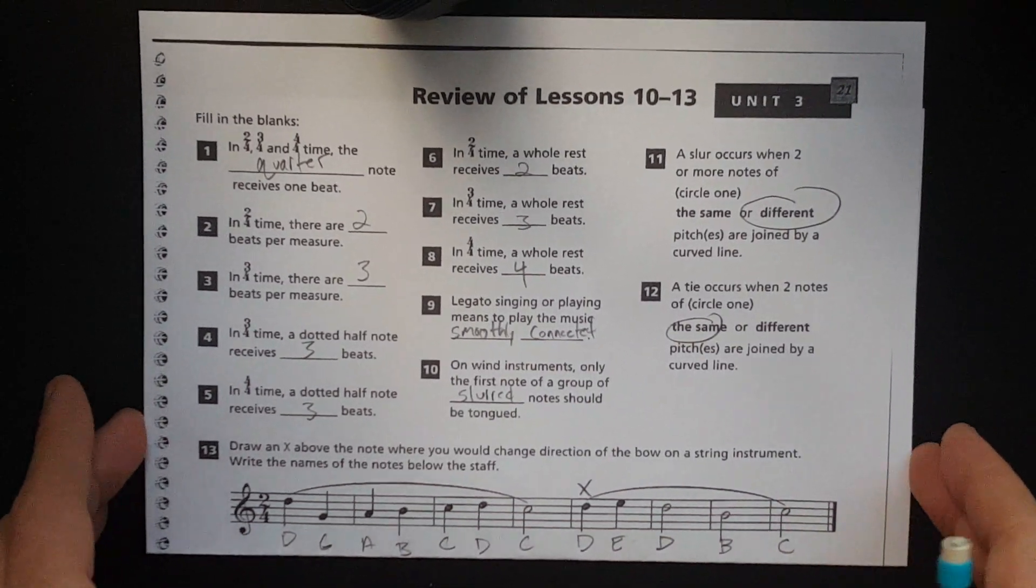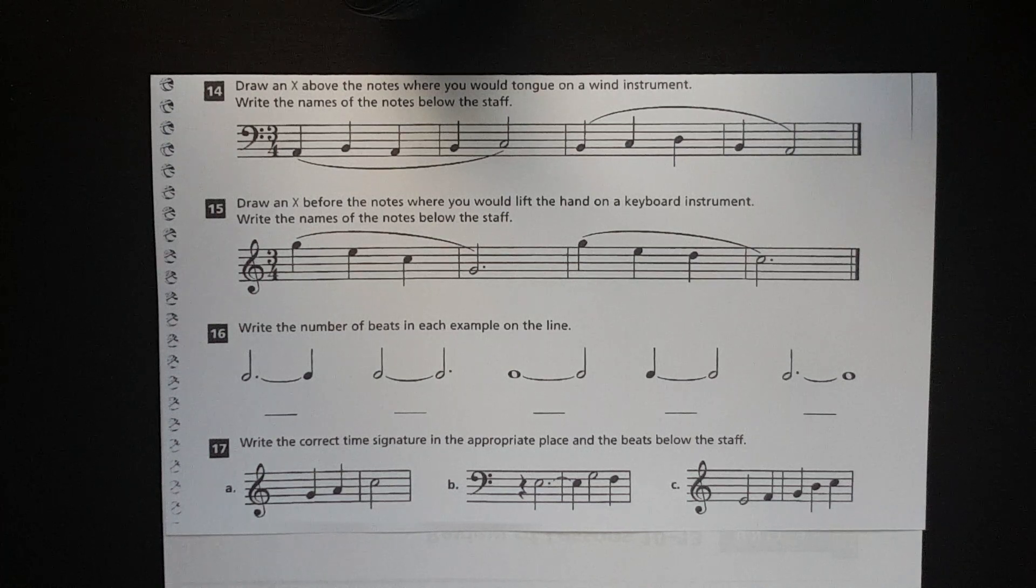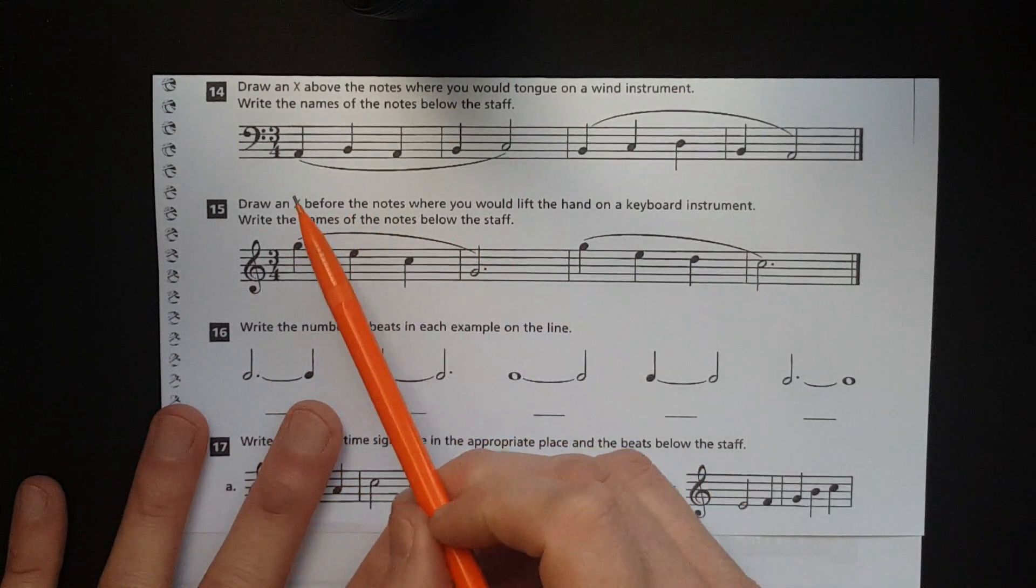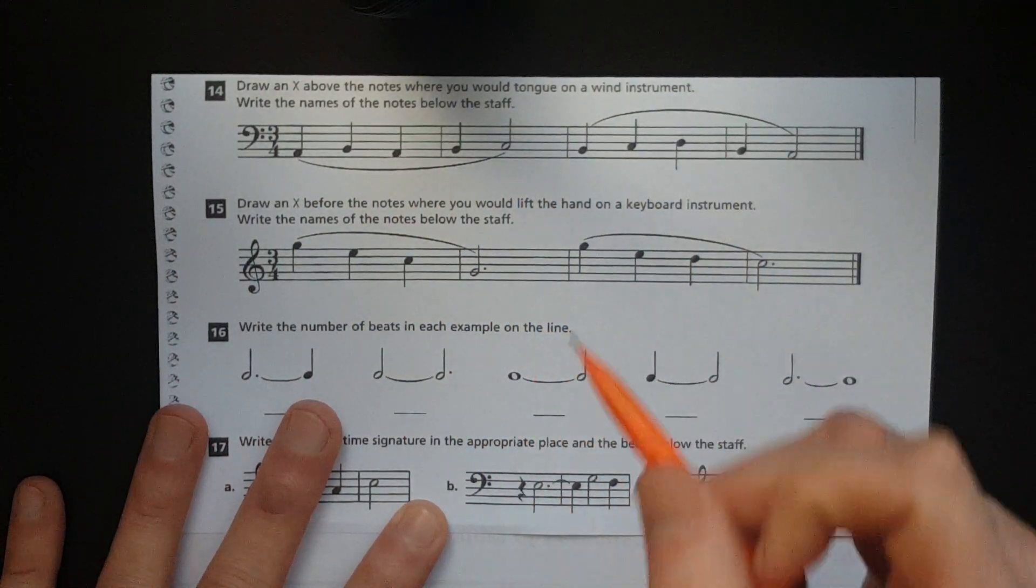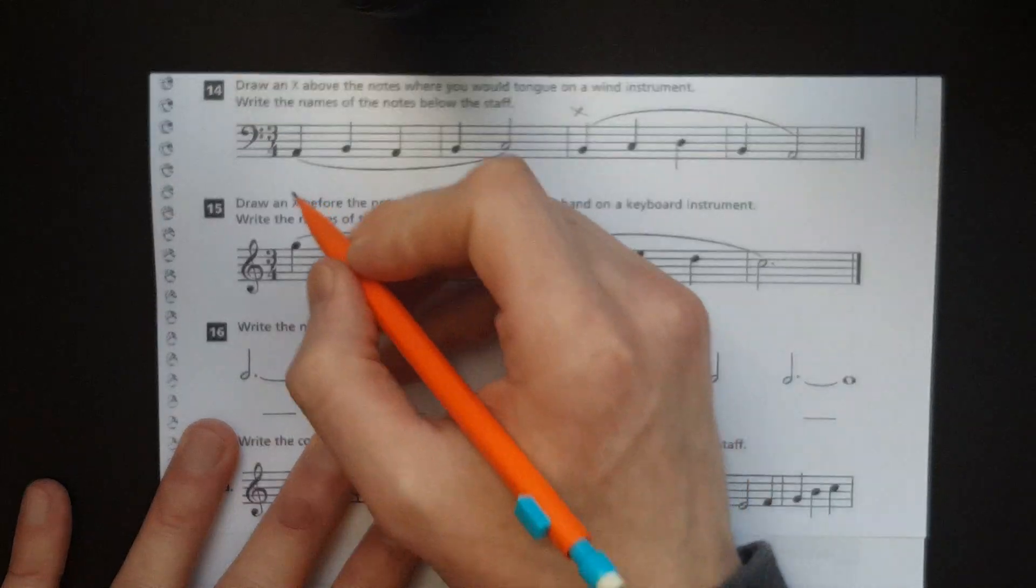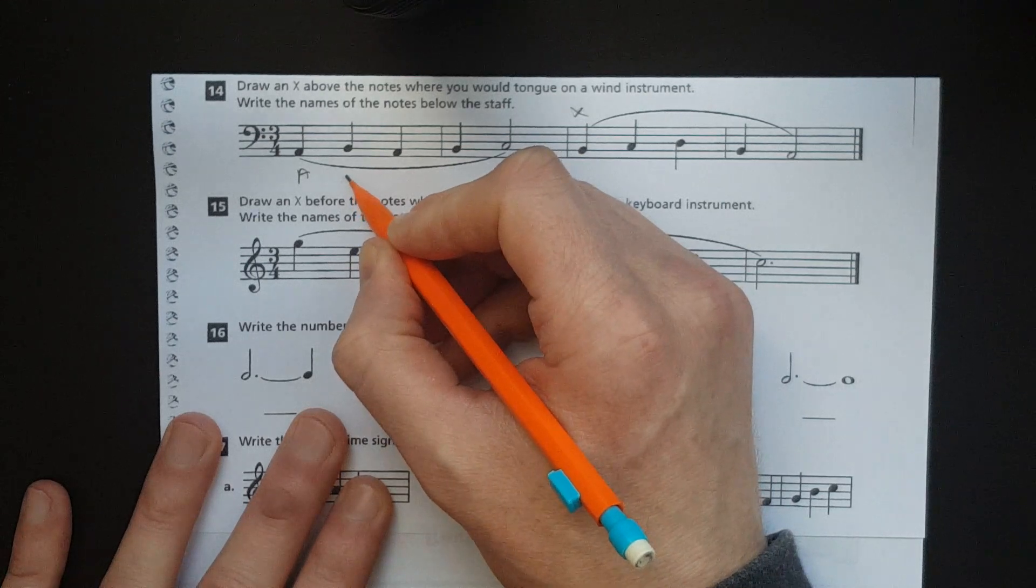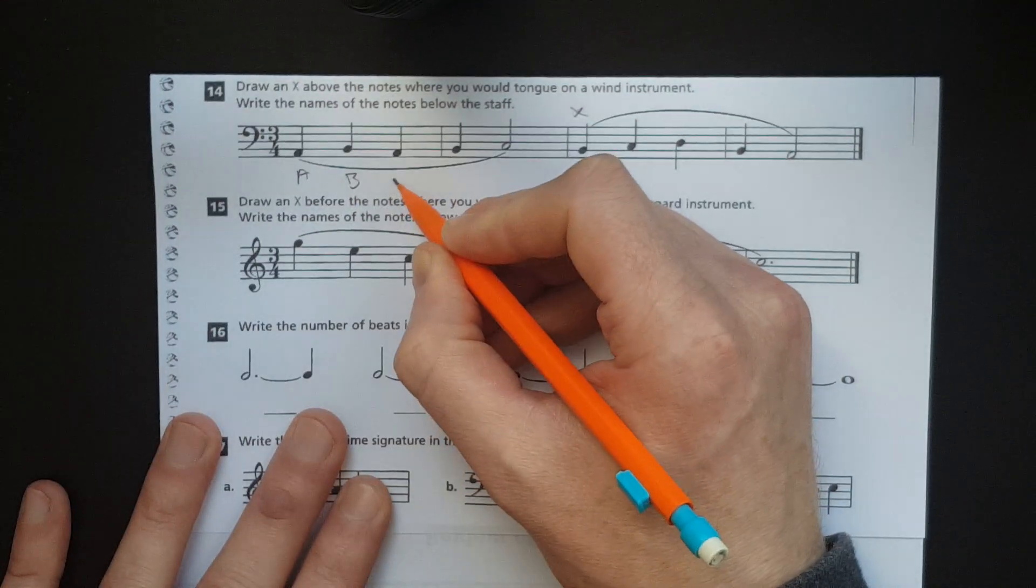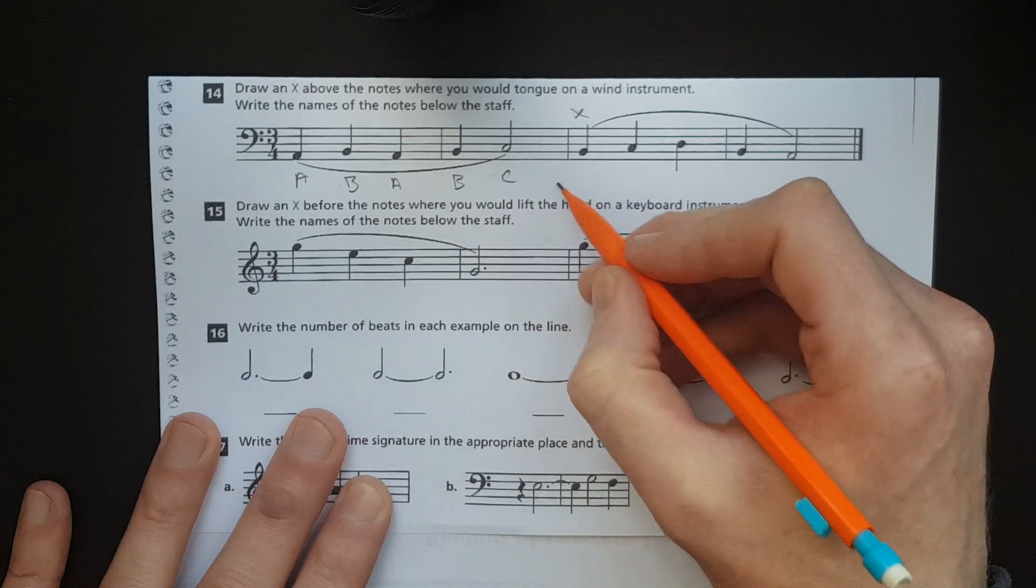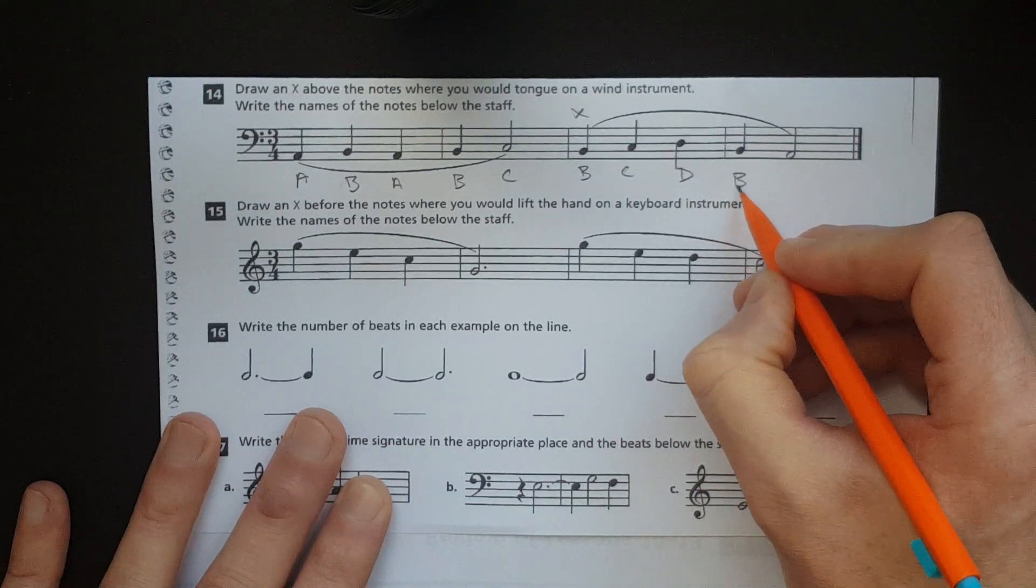So, let's go on to number 14. Flipping it over. Alright. Draw an X above the notes where you would tongue on a wind instrument. Write the names of the notes below the staff. So, again, that slur indicates that this is all one breath. And this is all one breath here. So, obviously, you would change the breath right there. Okay. And let's drop those note names. We're in bass clef. So, remember, all cows eat grass for the spaces. And grandma buys dresses for all for the lines.